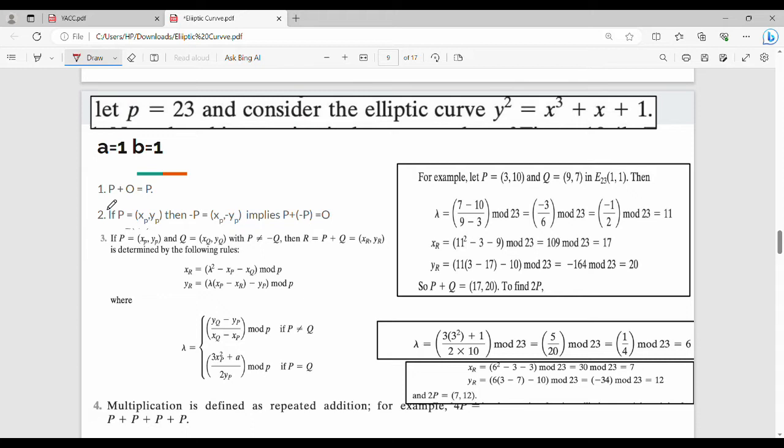Property 1: P + O gives P. Property 2: If P = (xₚ, yₚ), then -P = (xₚ, -yₚ). So if P equals (xₚ, yₚ), then -P equals (xₚ, -yₚ) where we multiply the y-coordinate by minus.